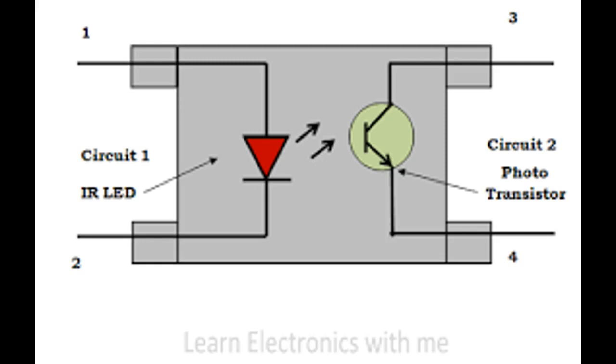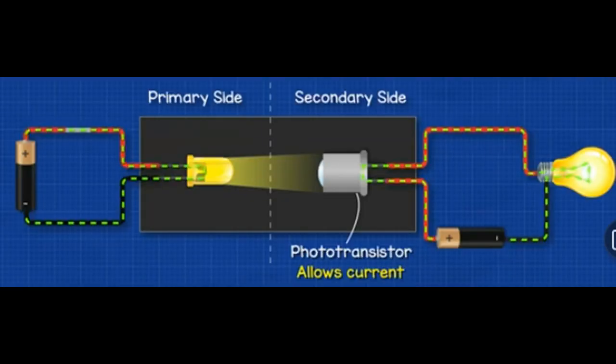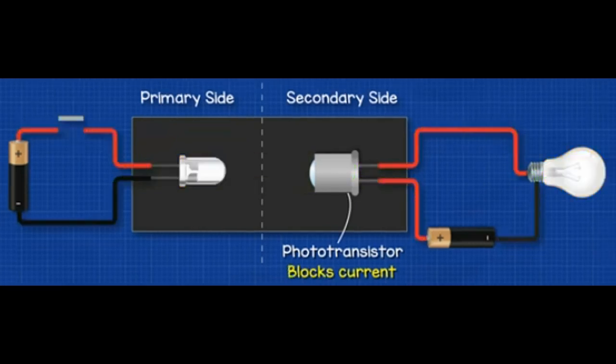The optocoupler is an electronic component which can be used in many different applications as an interface between low voltage digital or control circuits and large power electronic devices. So the optocoupler ensures that there is electrical isolation between two circuits.